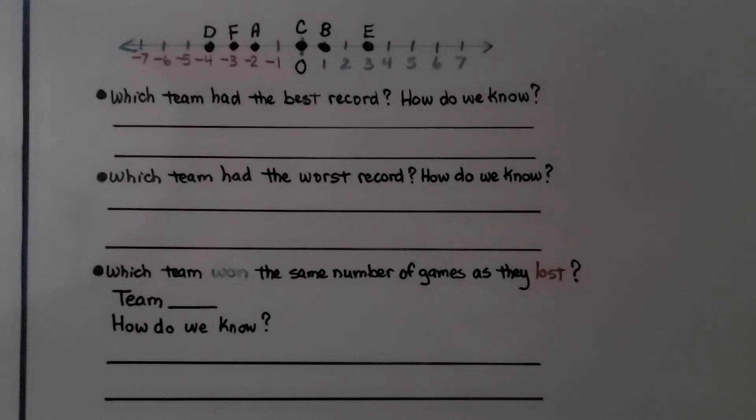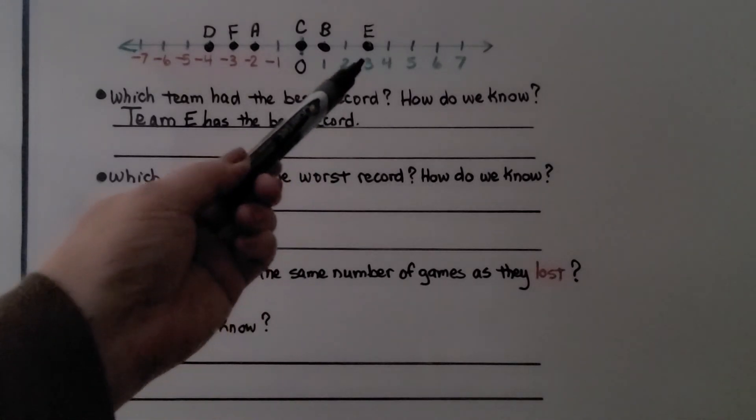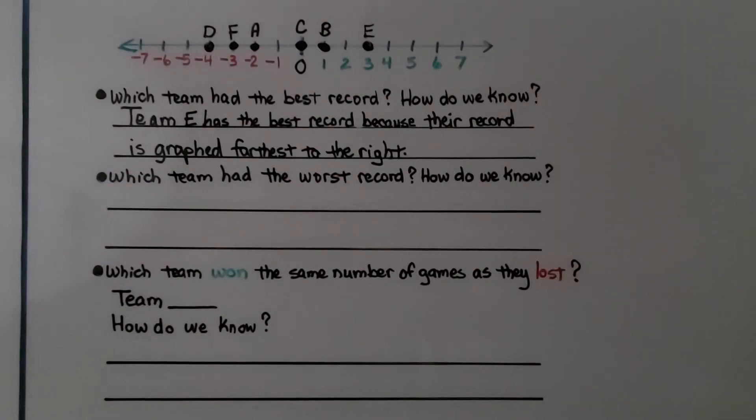So now we can answer some questions about this number line and the table. Remember, a team with more wins will have a positive record and a team with more losses will have a negative record. So which team had the best record? How would we know? If you said team E, you're right. Team E has the best record because their record is farthest right on the number line.